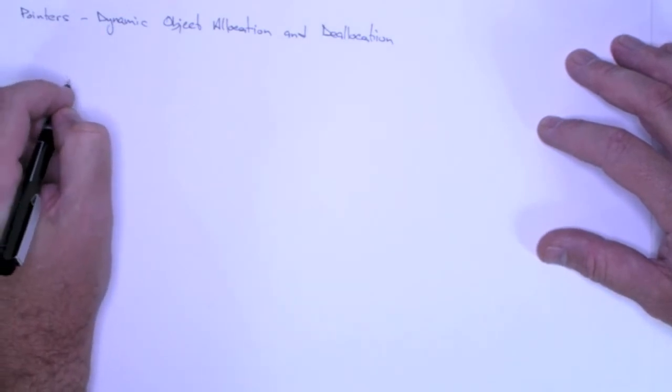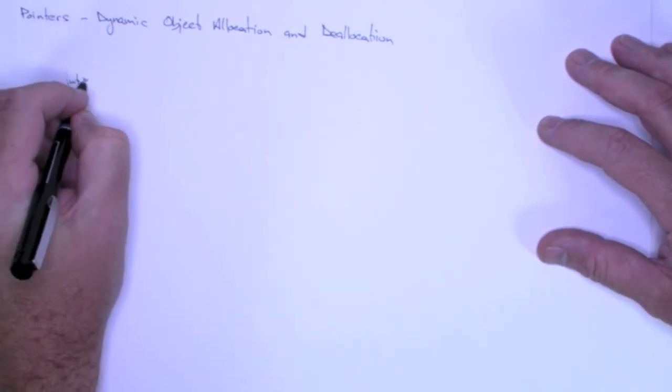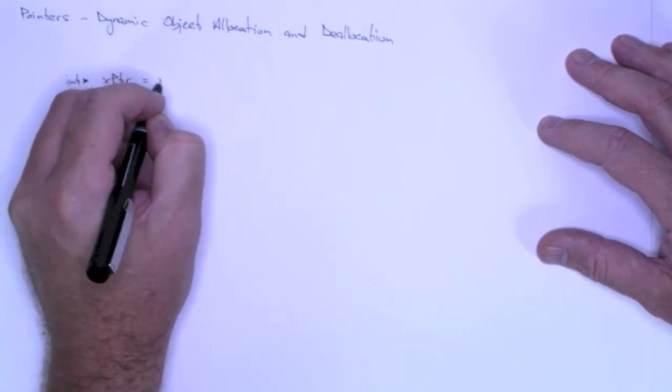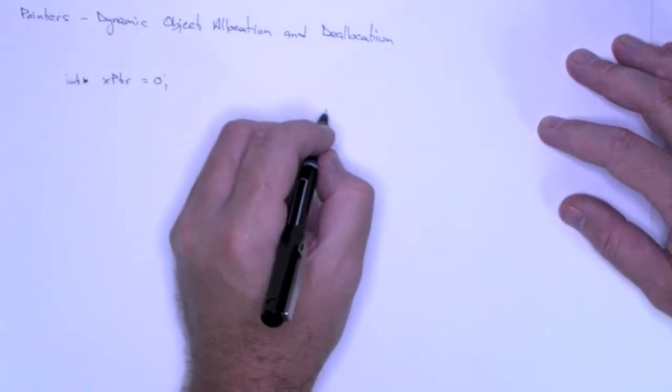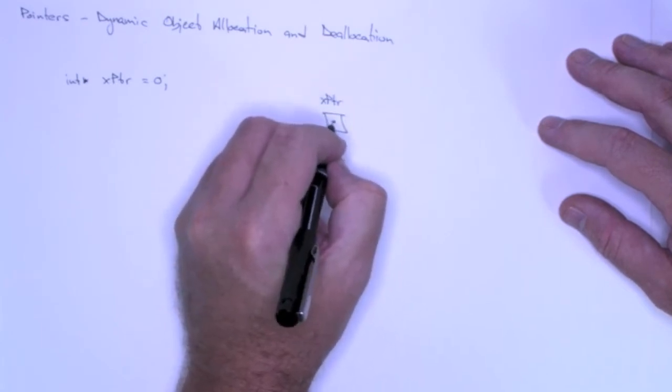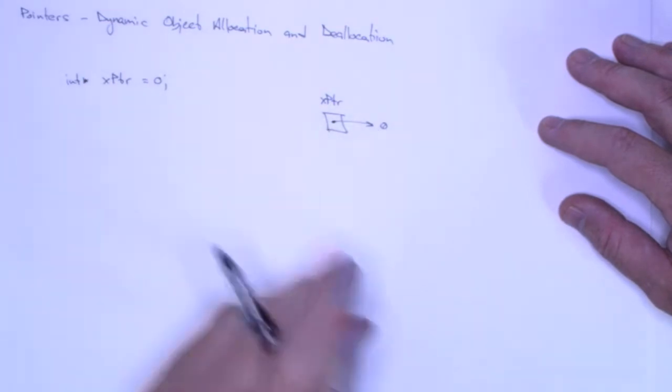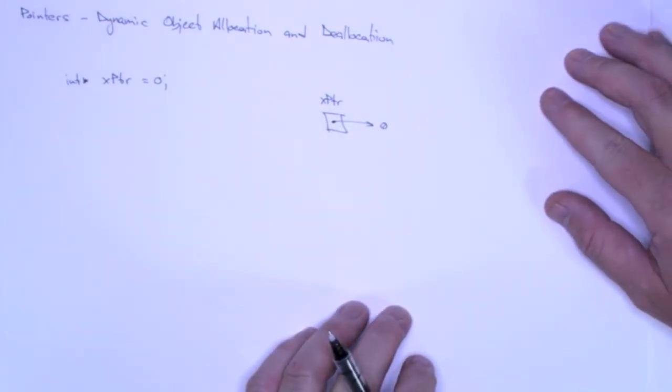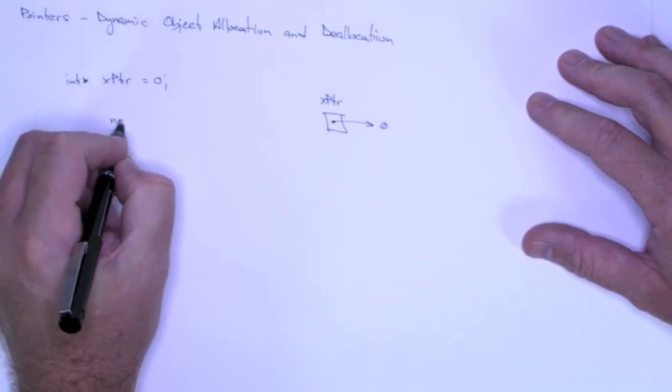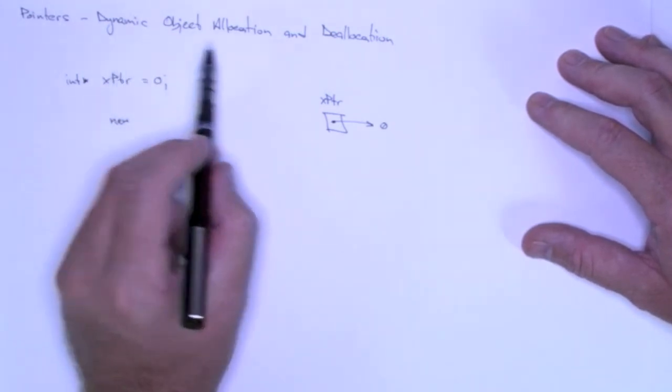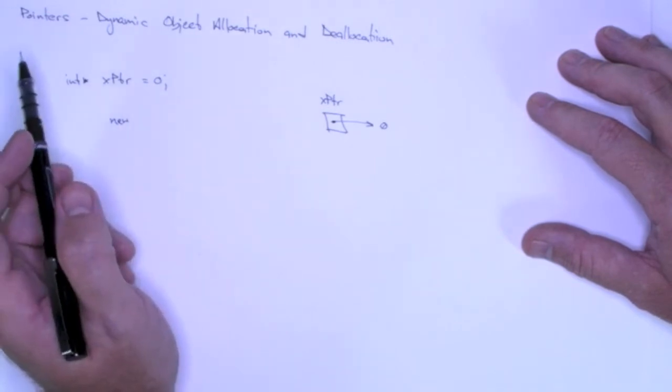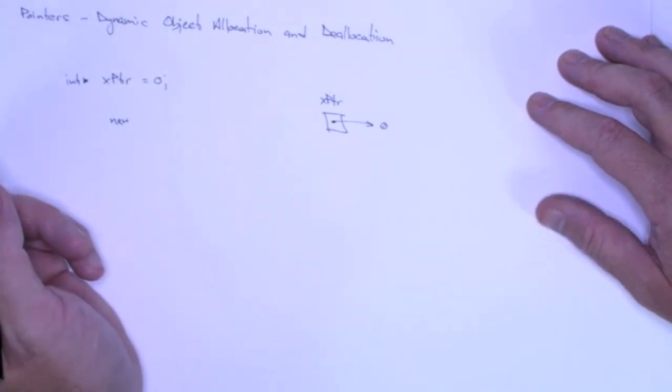So I'm going to start off by just declaring a pointer, x pointer and assigning it to null. So again, out in memory, I have x pointer and my pointer points to null. The new operator lets you dynamically create objects, dynamically construct objects, dynamically allocate objects.